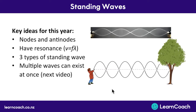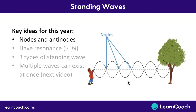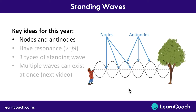There are three things you need to know about standing waves in this video, plus one more in the next video. The first thing is nodes and antinodes. Nodes are the areas of standing waves that have no movement at all, whereas antinodes are the areas which have maximum movement. A helpful way to remember this is that nodes have 'node' movement.